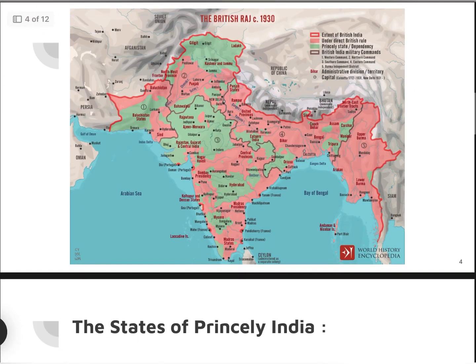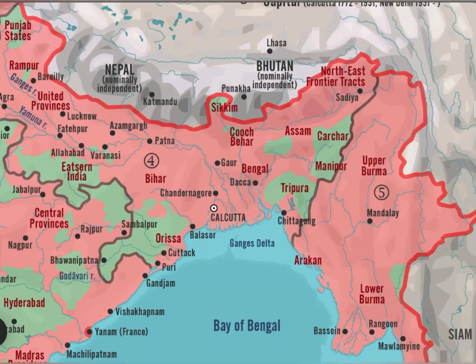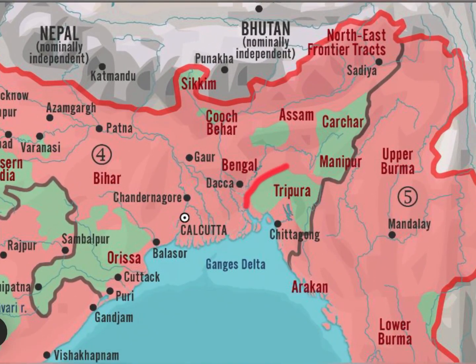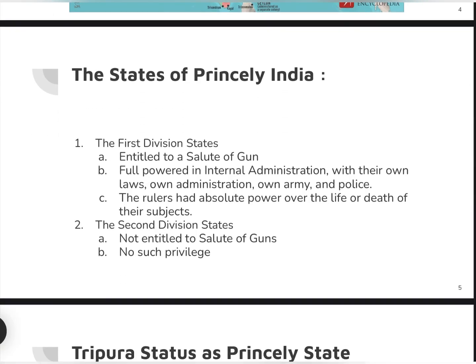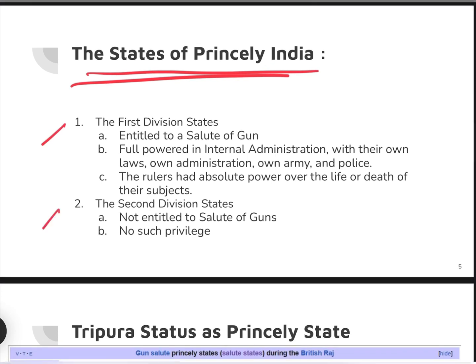Looking at the map, here is our Tripura. The princely states were divided into two kinds based on their status: first division and second division — just like marks divisions in exams.